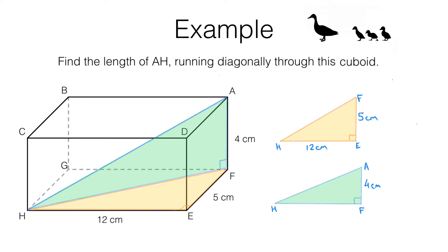But look at this. HF is actually part of the yellow triangle as well. We can see that in 3D. HF is one of the sides of the yellow triangle, but it is also one of the sides of the green triangle. So can we work out length HF from this yellow triangle? Using Pythagoras' theorem, we know that this length squared plus this length squared will give us this length squared.